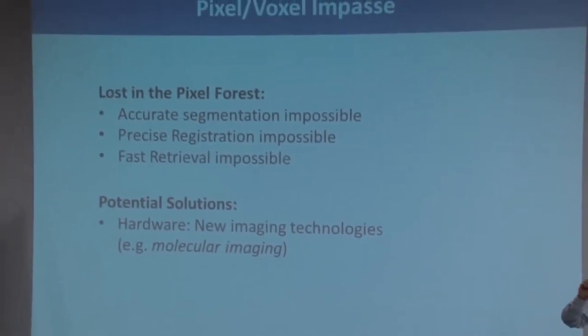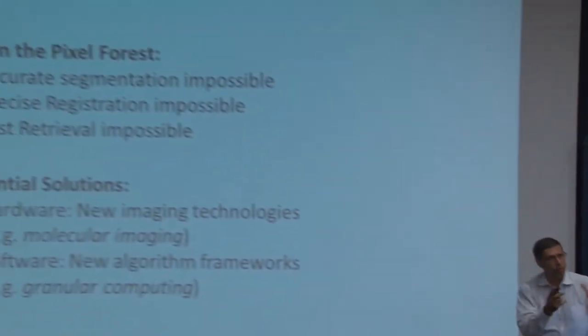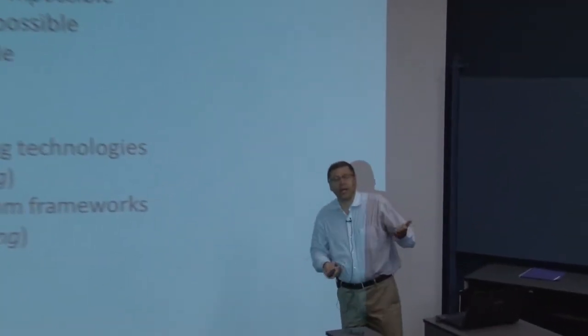What could be the potential solution? We need new imaging technologies. When I say molecular imaging as a potential way, I don't necessarily mean what we have today — something at the molecular level that captures tissue types as groups and regions, not pixels. From the software side, we need a new algorithm framework that works granularly — capturing granules, not pixels. We've been trying to do that with uniformity in segmentation, but it doesn't work because information lost at the hardware and sensor level cannot be recovered in software.